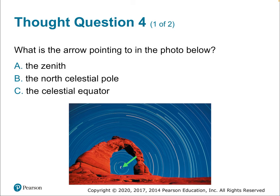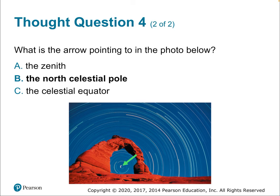Thought question four: what is the arrow pointing to in this photo — the point at the center of the tightest circles of circumpolar stars? It's the North Celestial Pole. It's definitely not the zenith because it's not right overhead, as we can see in the photo — it's actually near the horizon. In the southern hemisphere, there's no bright star close to the celestial pole, but here we can see Polaris nearby.